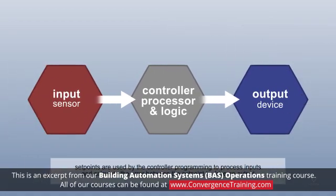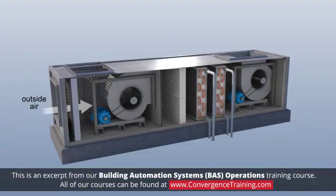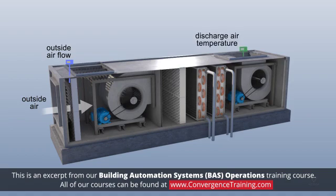Set points are used by the controller programming to process inputs and calculate the error between the set point to drive an output. Some types of set points or critical sensors on a typical air handler include outside air flow, discharge air temperature, and duct static pressure.